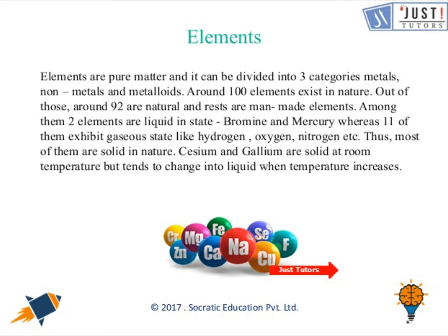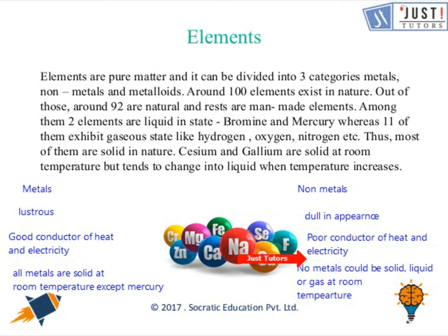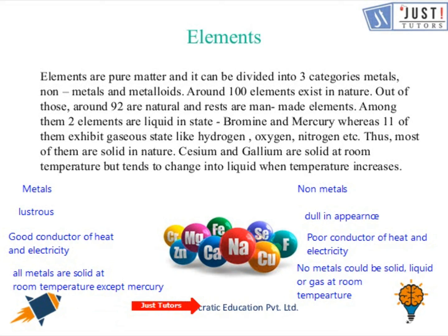Metals are lustrous — they have shine — whereas nonmetals are dull in appearance. Metals are good conductors of heat and electricity, whereas nonmetals are poor conductors. All metals are solid at room temperature except mercury. Nonmetals can be solid, liquid, or gas at room temperature.